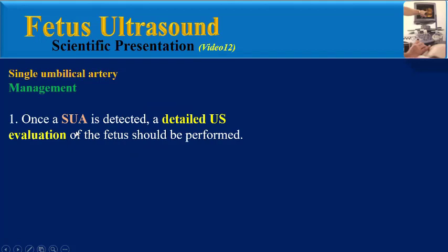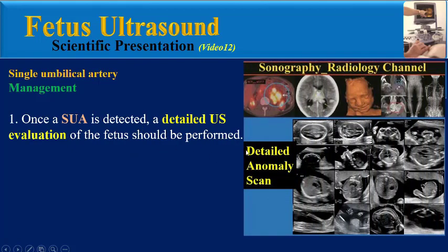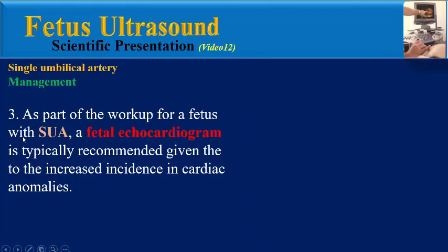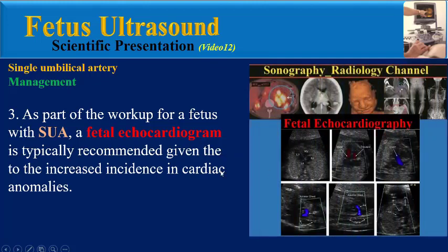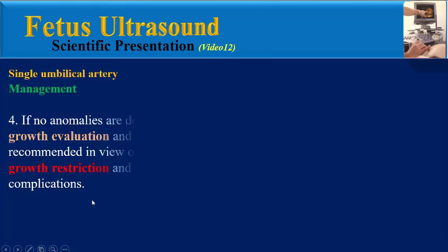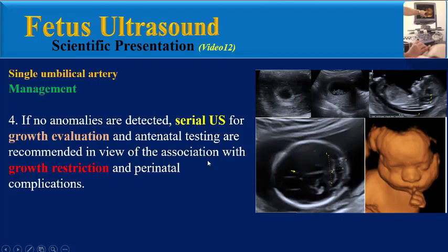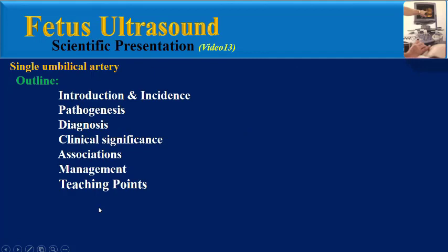For management of a fetus with single umbilical artery: once detected, a detailed ultrasound evaluation should be performed. If a fetal anomaly is detected, fetal karyotyping should be offered. A fetal echocardiogram is typically recommended given the increased incidence of cardiac anomalies. If no anomalies are detected, serial ultrasound for growth restriction and antenatal testing are recommended in view of the association with growth restriction and prenatal complications, though this is not universally accepted.